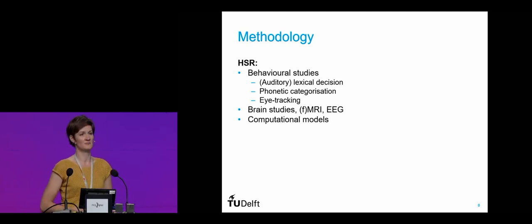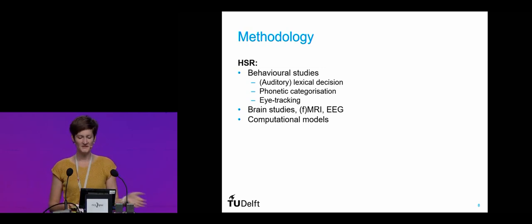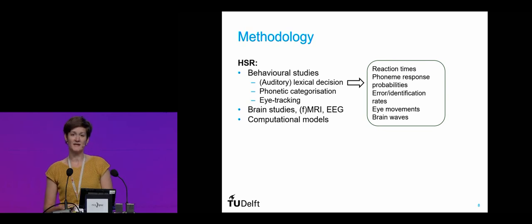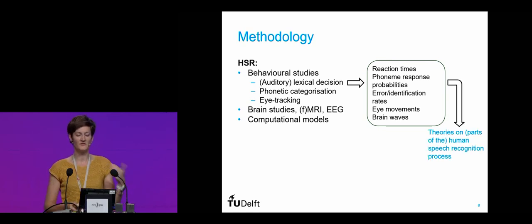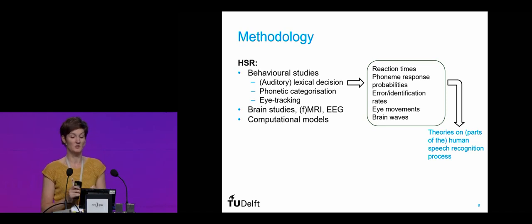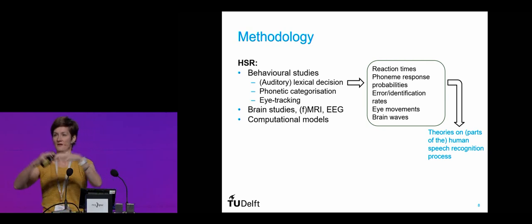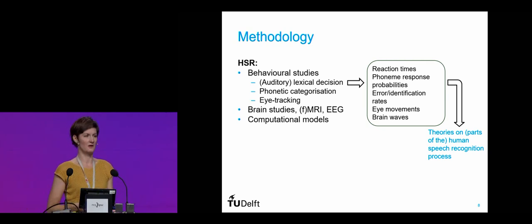You can also build computational models, which are implementations of the human speech recognition process in a computer model, trying to simulate what might be happening in the human brain. These different techniques give you measurements like reaction times, phoneme identification rates, error rates, eye movements, and brain waves, which are used to infer theories on parts of the human speech recognition process — not about the entire process, just small chunks of it.